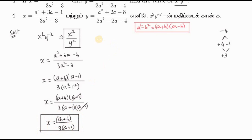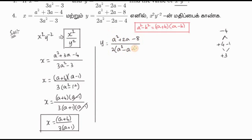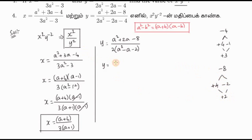Now y equals — let's simplify. So y equals the expression with a squared plus 2a minus 8 in the numerator, and the denominator is a squared minus a minus 2. Minus 8 factorizes: 4 times 2 equals 8, plus 2 plus 2 equals minus 2, so we get a plus 4 into a minus 2.